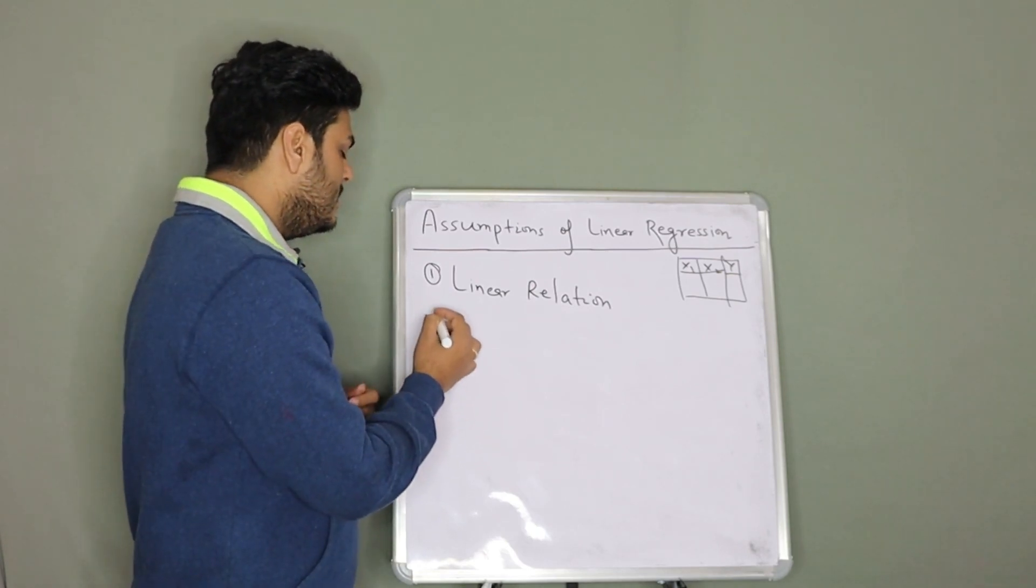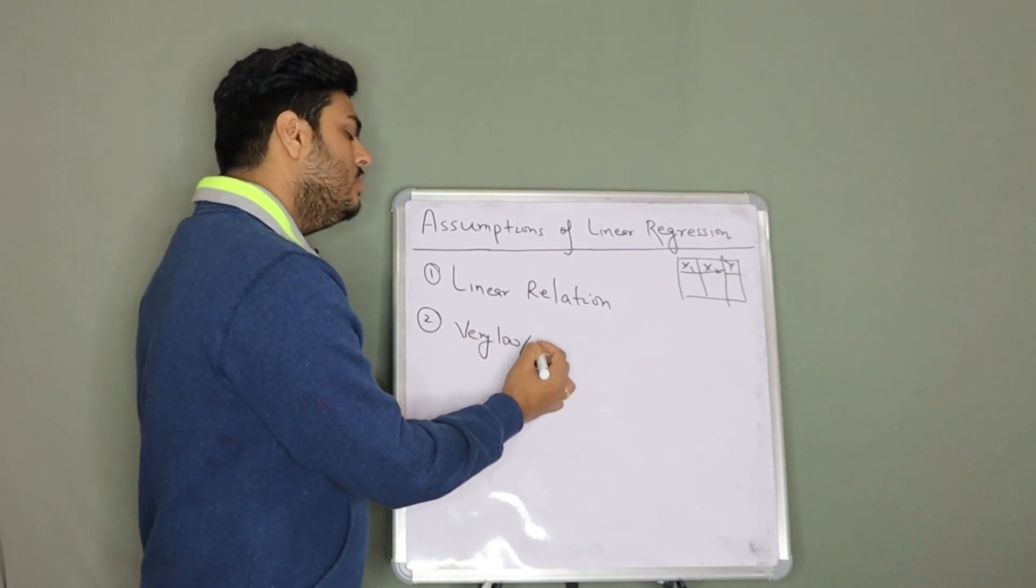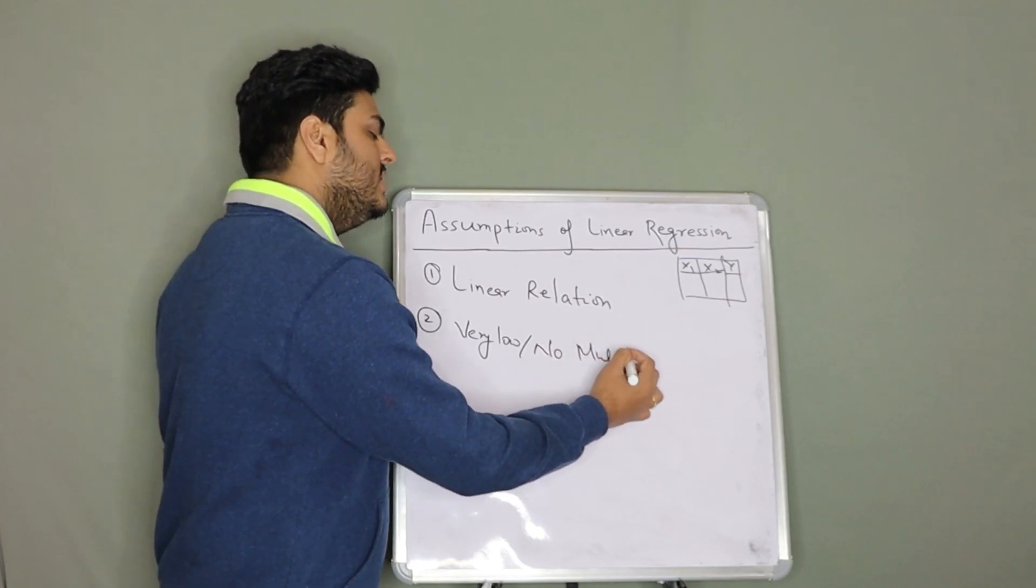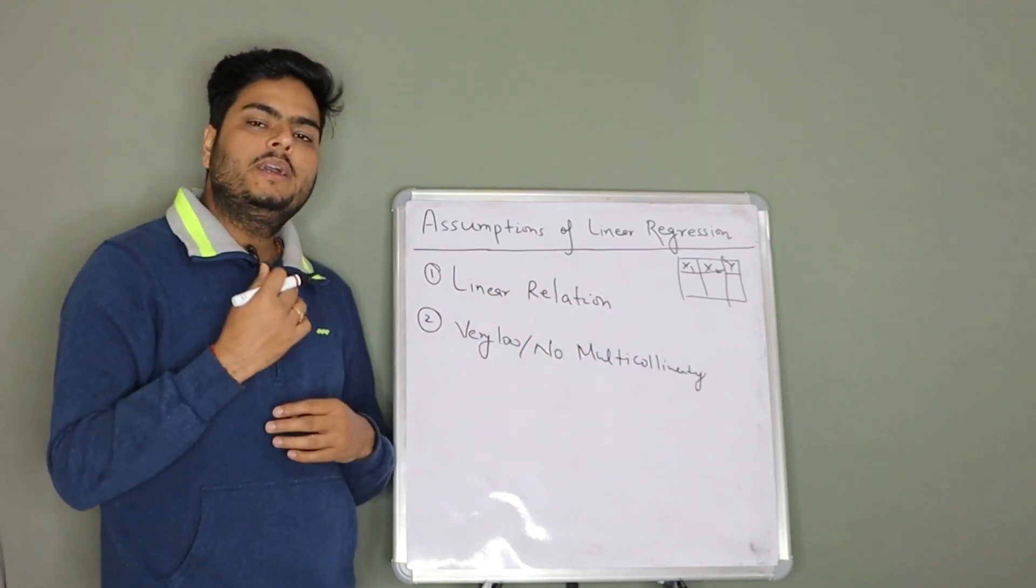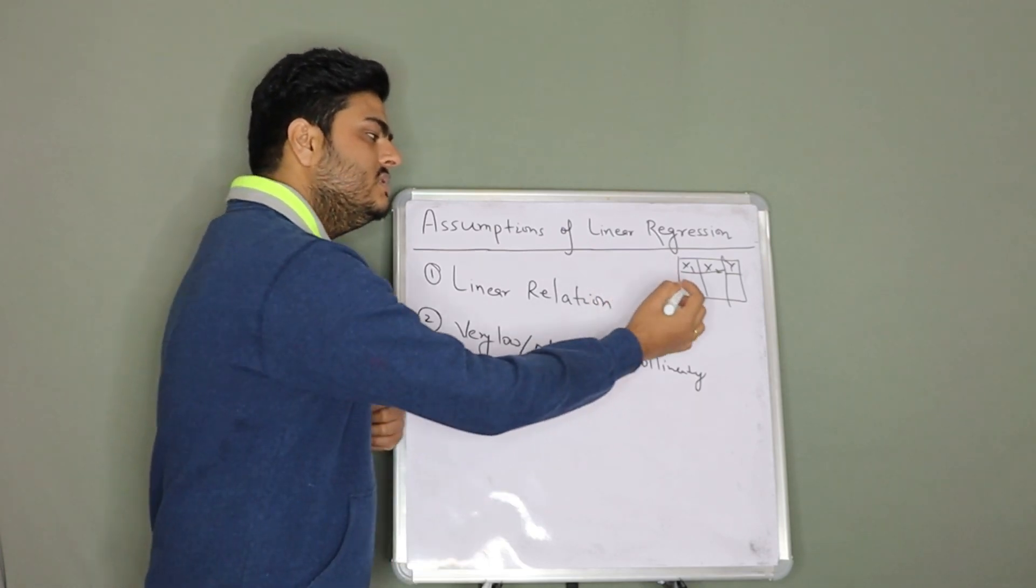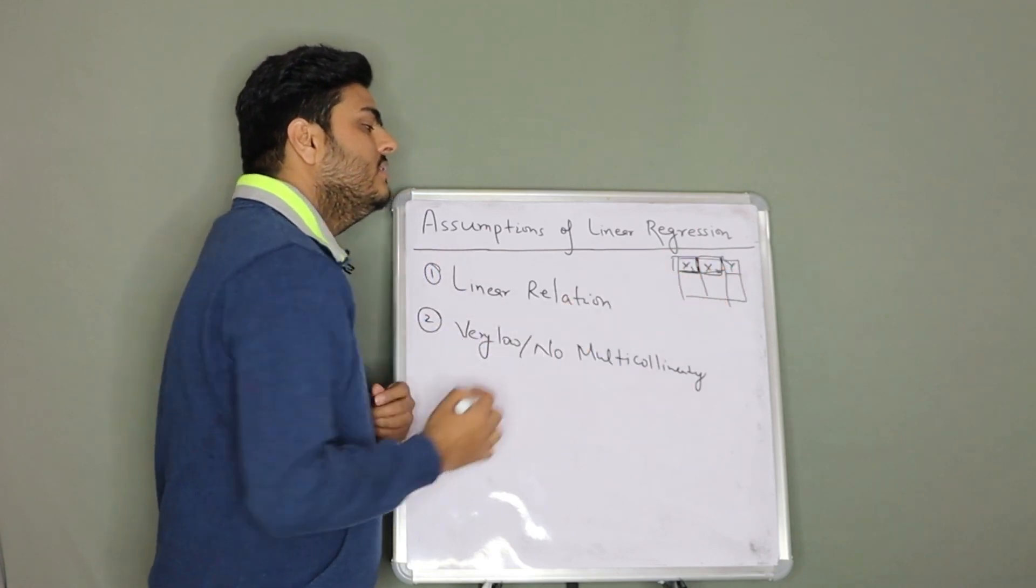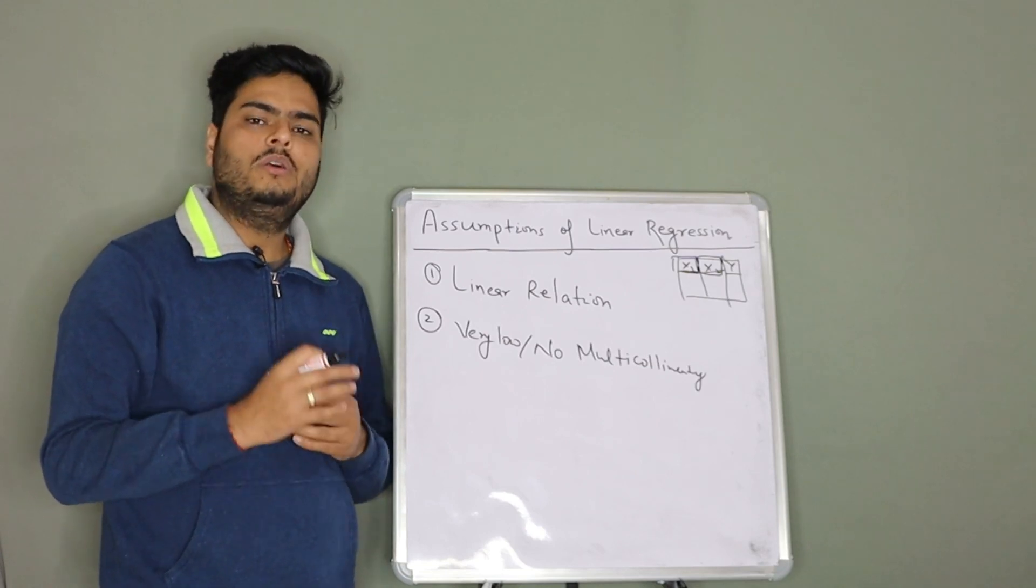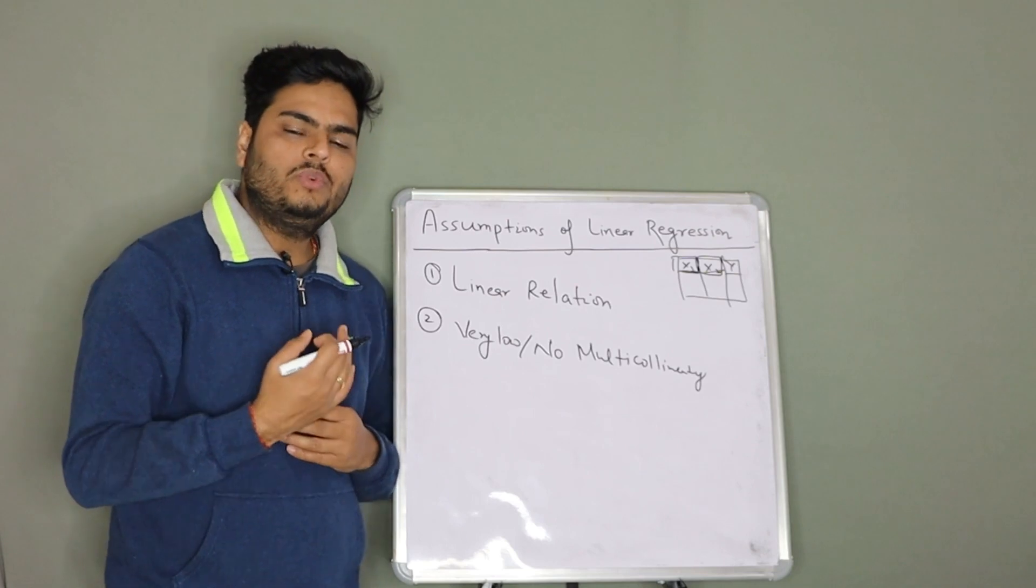Number two is very low or no multicollinearity. So what is multicollinearity? Multicollinearity is a phenomenon where your independent variables are collinear to each other. For example, in this scenario, let's say x1 and x2 have very high degree of correlation. Now that is a problem for linear regression model. The interviewer might ask you why that is a problem.